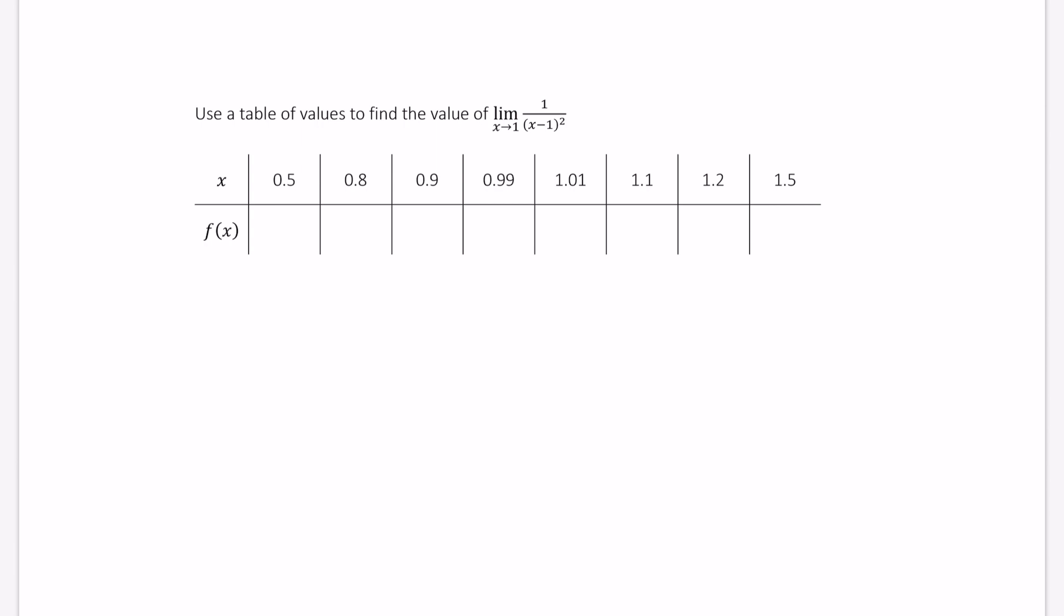In this case, we're told this is our limit we are evaluating. That is, f of x is equal to 1 over x minus 1 squared.